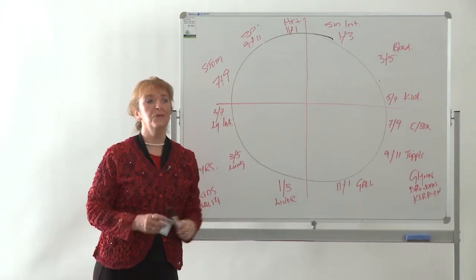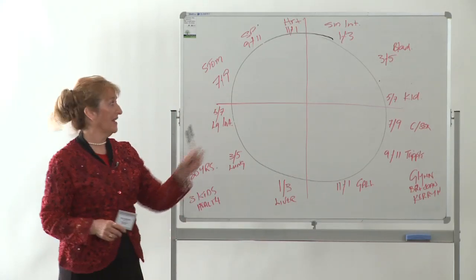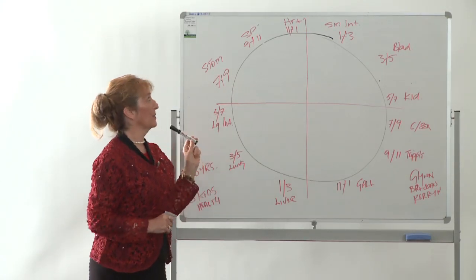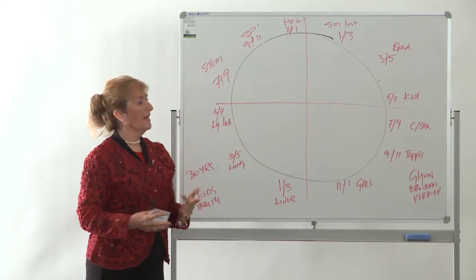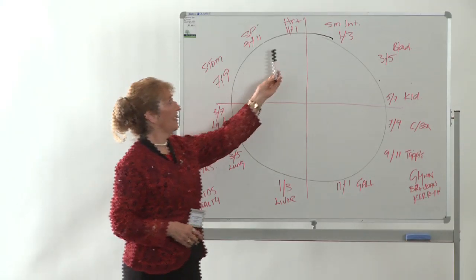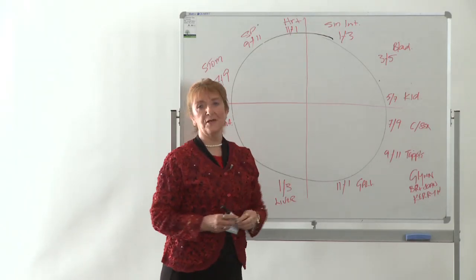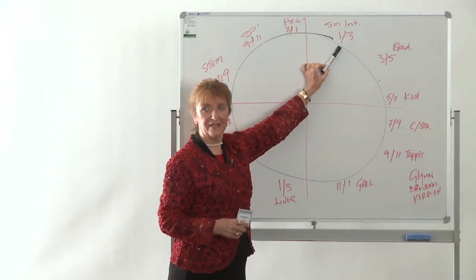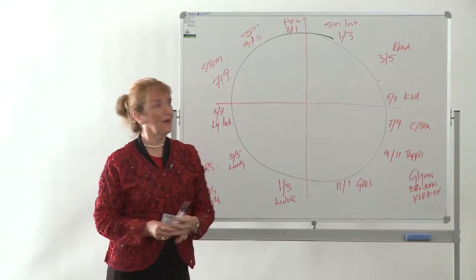Our stomach then works between 7 and 9. It doesn't work at any other time of the day. So if you're going to miss breakfast, you're actually missing a great opportunity. Our spleen then kicks in between 9 and 11 and that looks after the blood and the cleanliness of the blood. The heart works between 11 and 1, small intestines between 1 and 3. So that's the next best time to eat. If you're going to have lunch, around about 1 o'clock is a great time to eat.